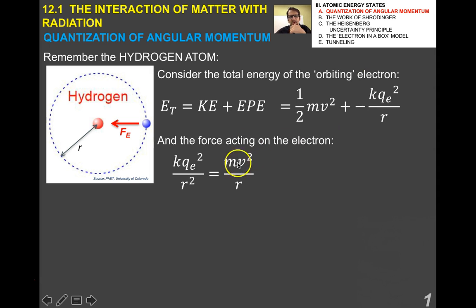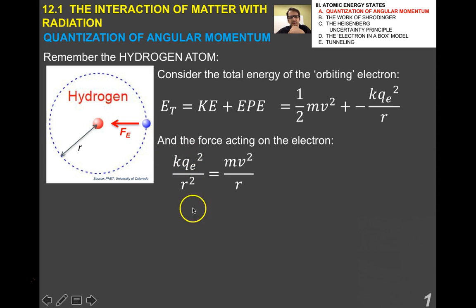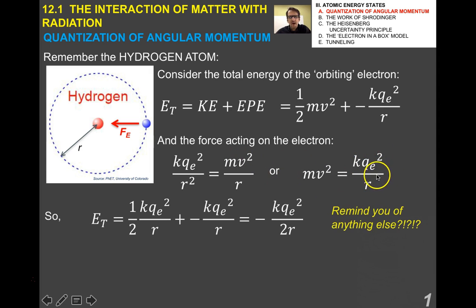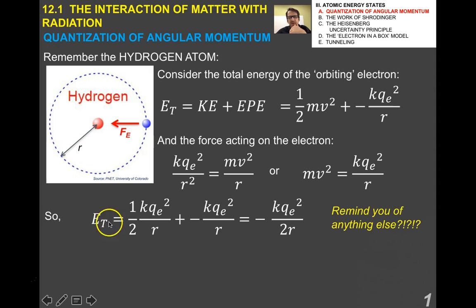Note the minus sign, which has to be that way because we define potential energy to be zero at infinity, as with gravitational potential energy. The centripetal force acting on the electron is the electrical force. The electrical force is equivalent to the centripetal force. Solving for mv², we get kqe² over R. Going back and considering the total energy of the orbiting electron, after some very simple algebra, we end up with total energy equals negative kqe² all over 2R.